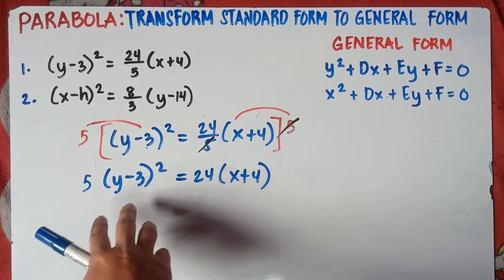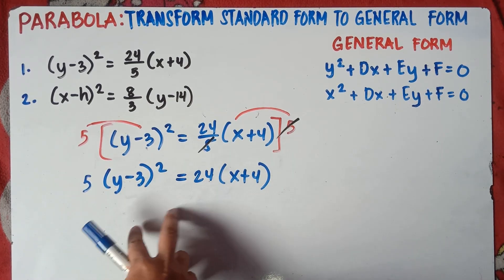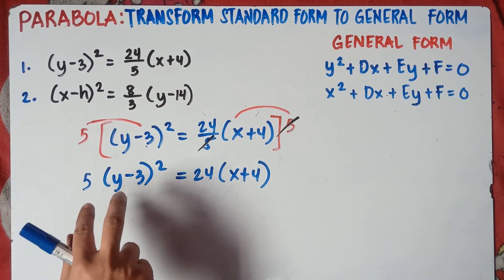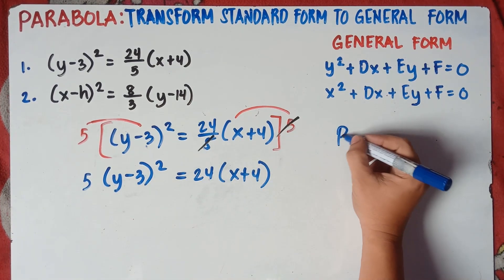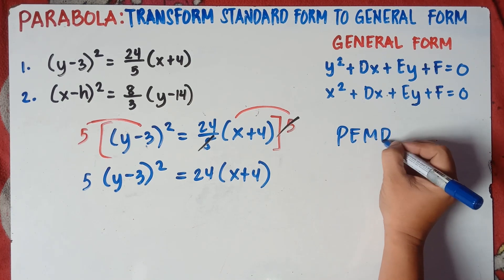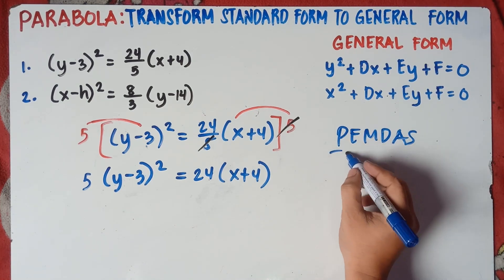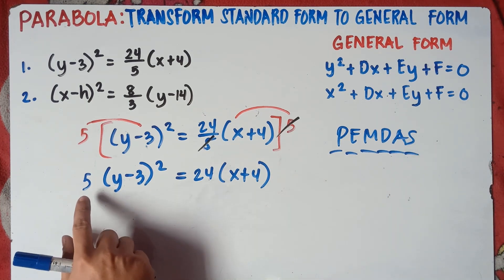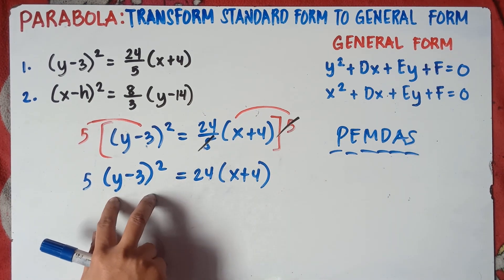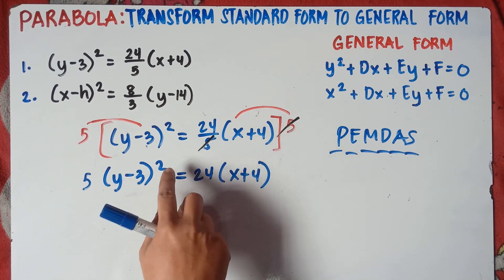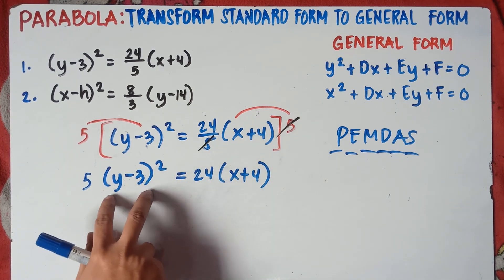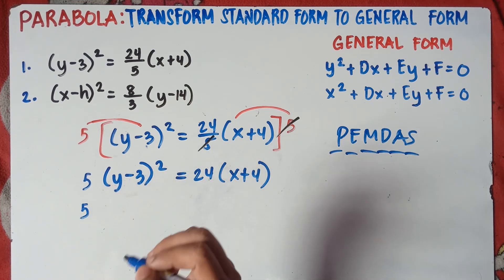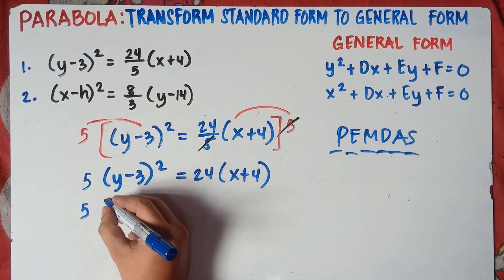Now, it would be really easy for us to simplify this equation. But before multiplying 5, always follow FEMDAS — parentheses, exponent, multiplication, division, addition, subtraction. So do not multiply 5 into the parenthesis yet, because parentheses and exponents come first. Simplify the parenthesis exponent first before multiplying by 5.